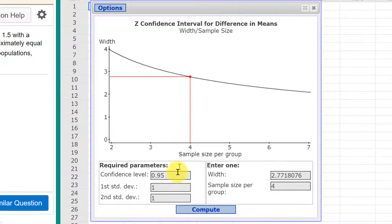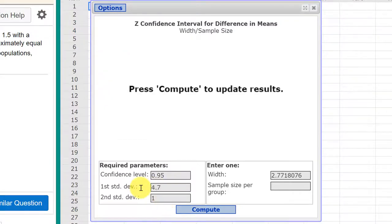We have a 95 percent confidence level, so that's correct. Our sigma squares were 22 and if you take the square root of that, that's 4.7 for both. 4.7, 4.7.